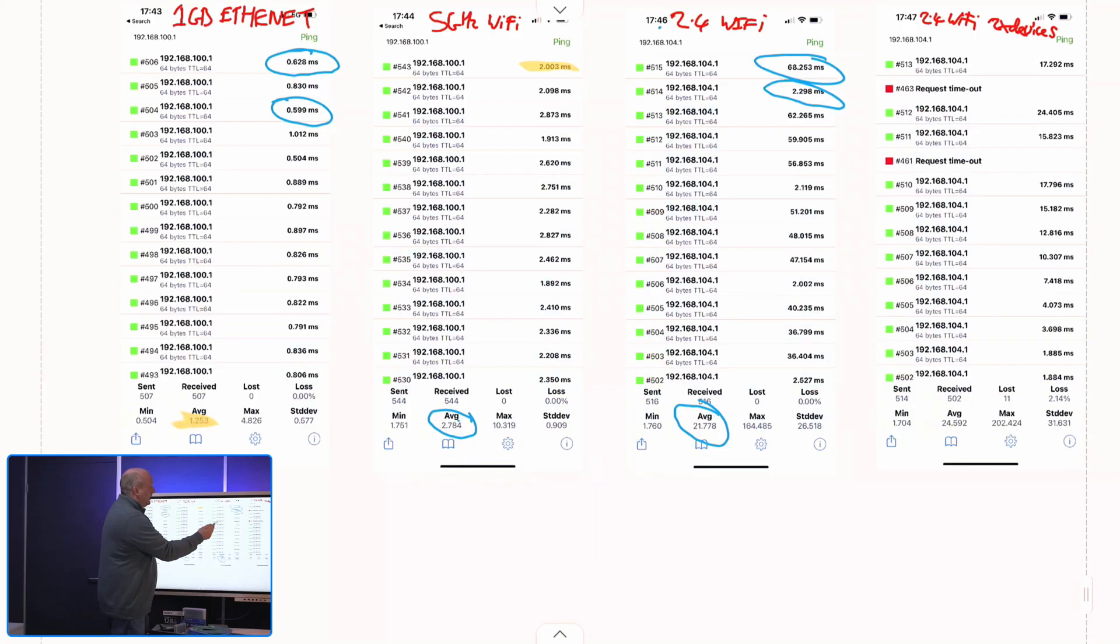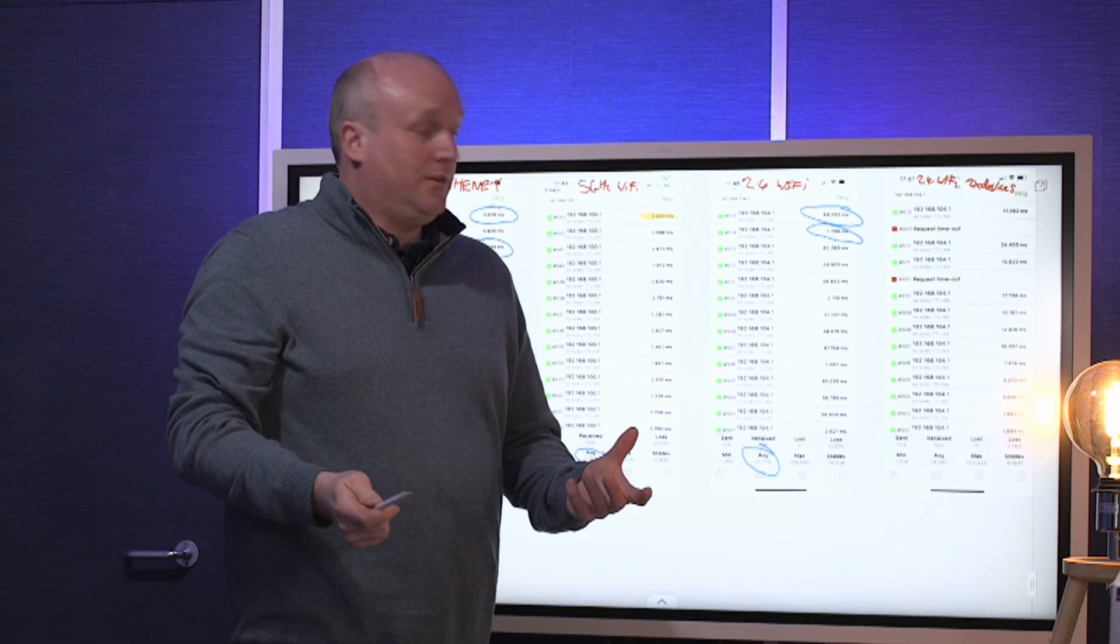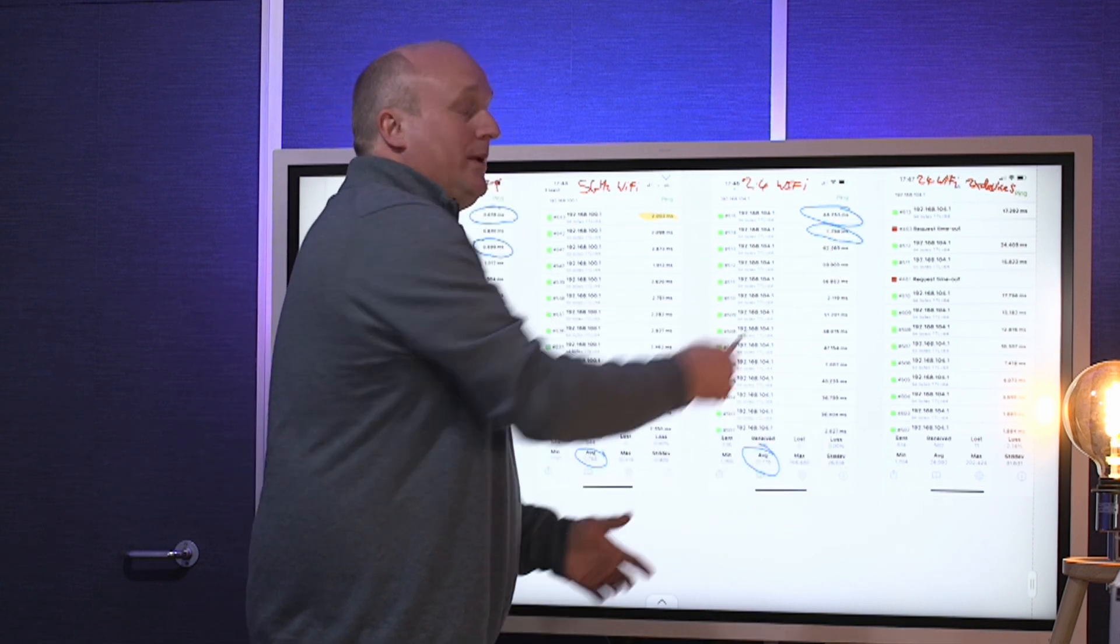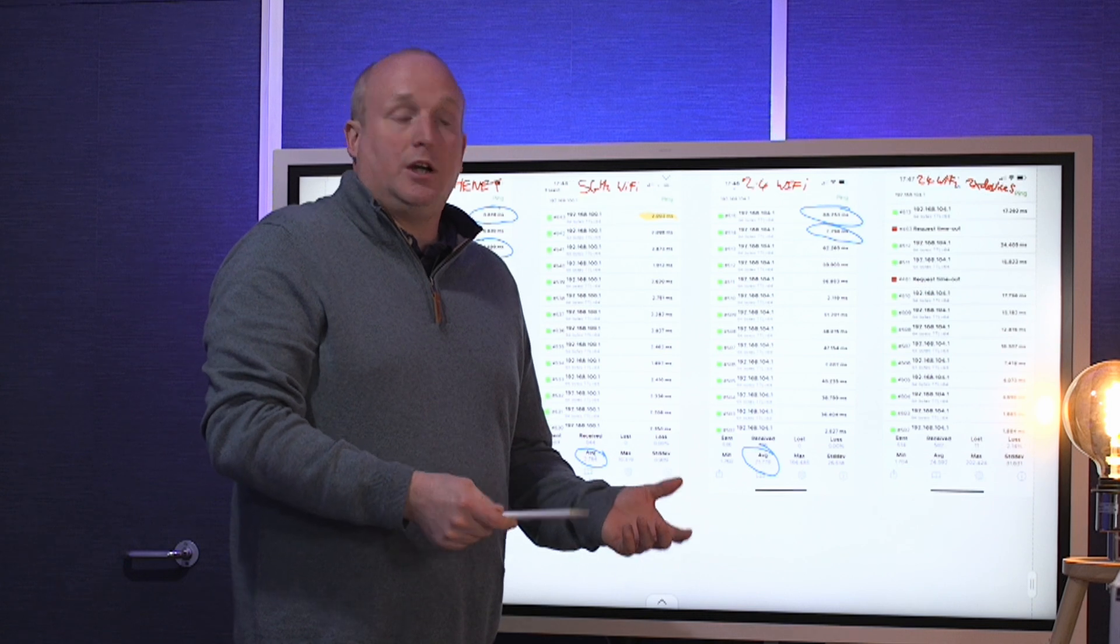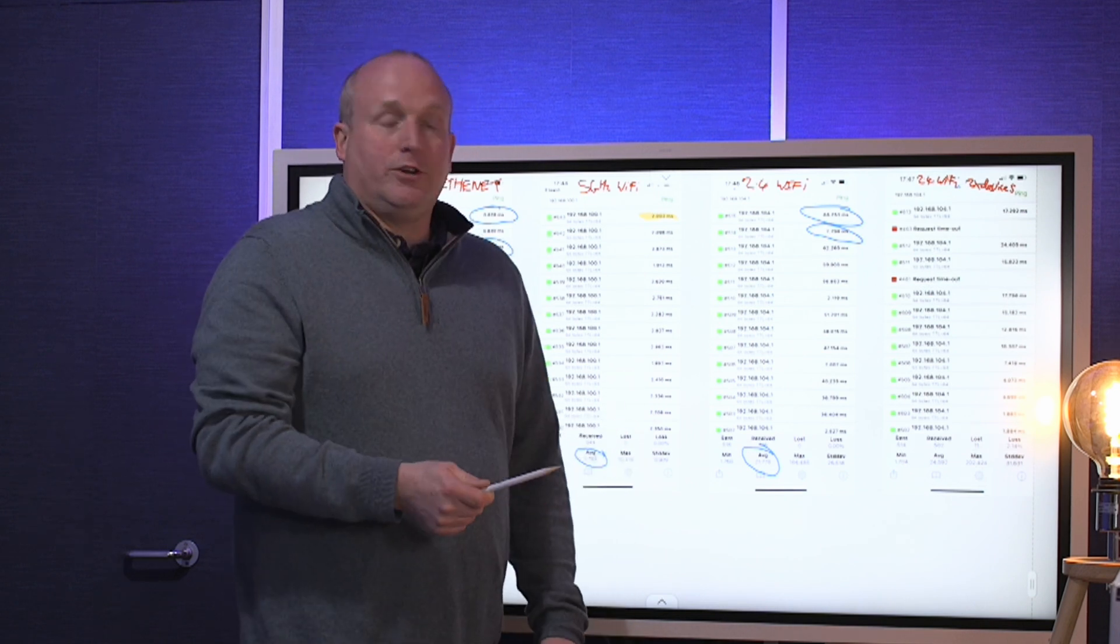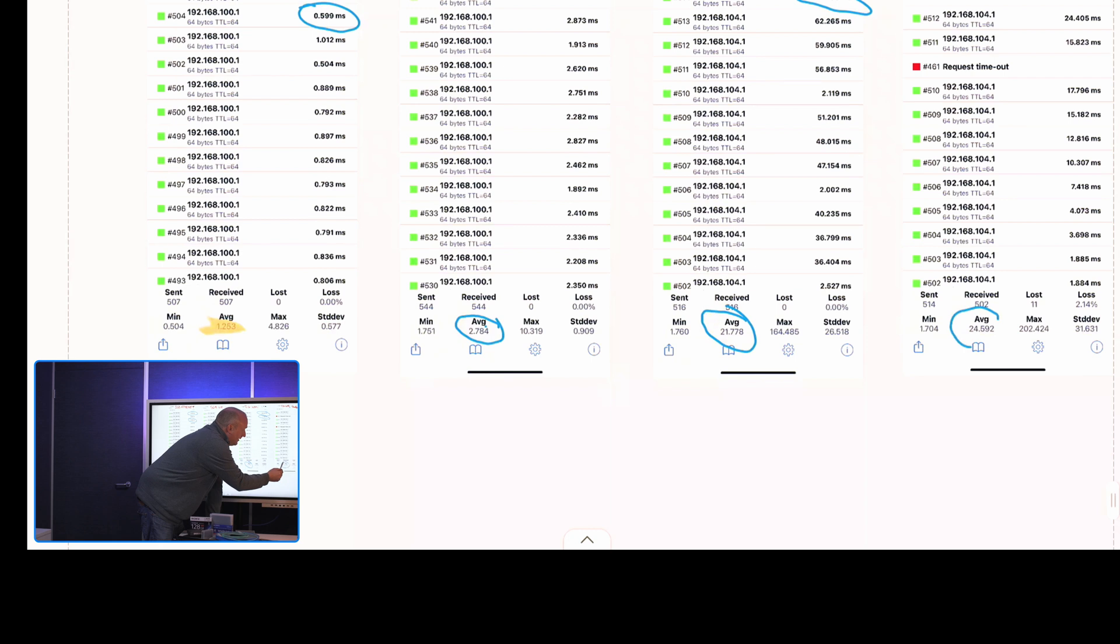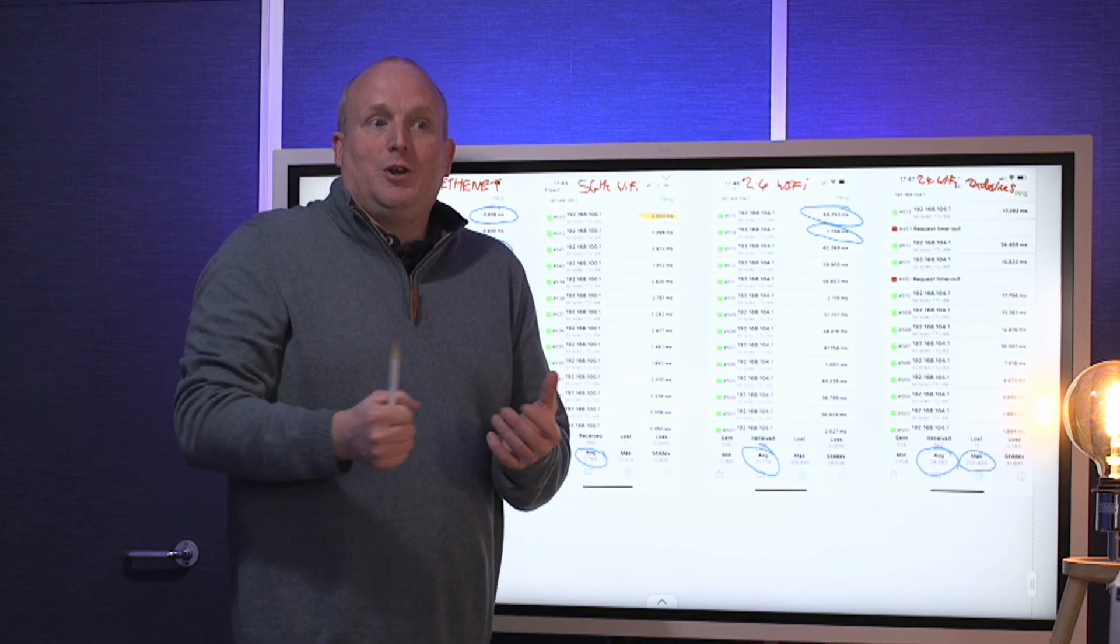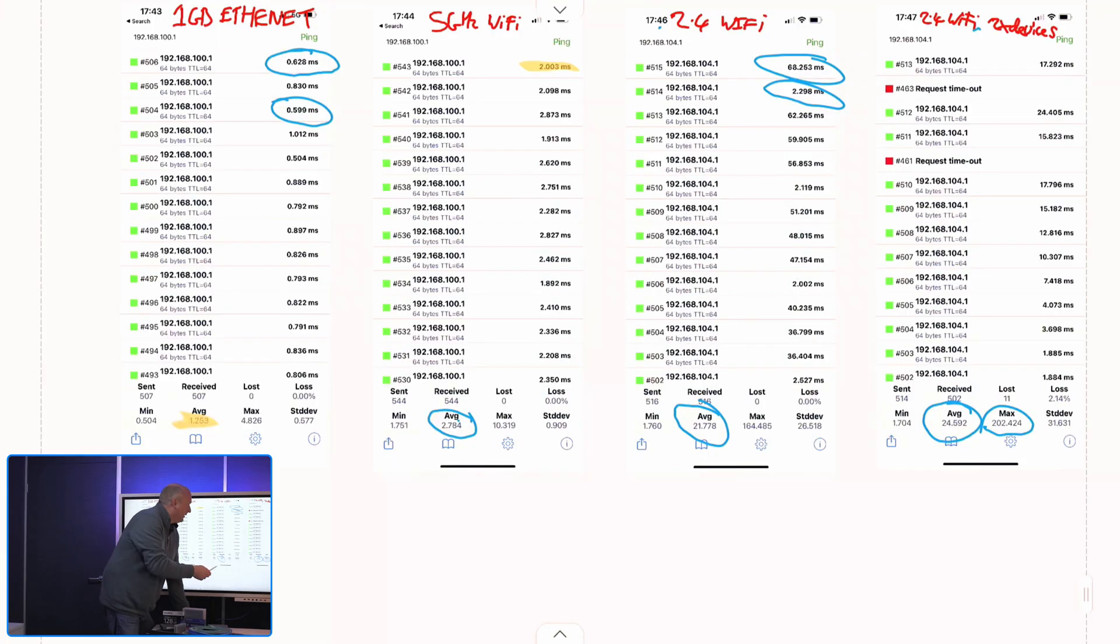Now the final test I've done here is with 2.4 gigahertz and I've actually put two devices on, one downloading or doing a speed test whilst doing the ping. This could simulate maybe a games console downloading the game at the same time as something dependent on lots of packets like voice going through or a Zoom call. What would be happening to your network? You can see the average time here is 24 and a half milliseconds, nearly a quarter of a second. But we've got the max time at over two seconds. You can imagine on a Zoom call if you're losing that data for two seconds, that's going to break up. And we've also got here packet loss, so we've lost two percent of the network traffic.